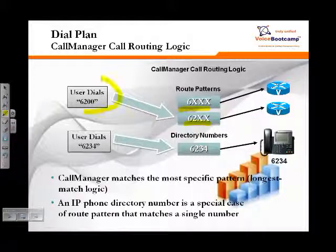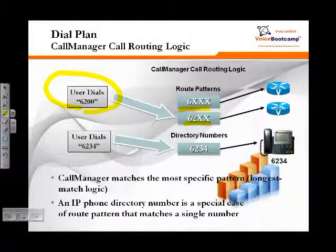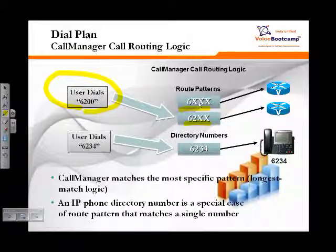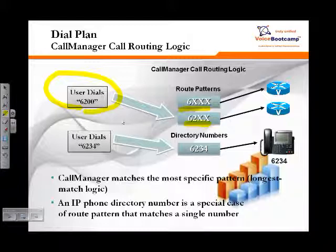Now, if the user dials 6200, what will happen is it will have a two-potential match. At this stage, the system will look at the two patterns and wait to see how many digits the user entered. When the user enters four digits, the system realizes it has two patterns, but because the second pattern is more specific, it will choose the second pattern, unless the user is prevented from selecting it due to partition and calling search space issues.